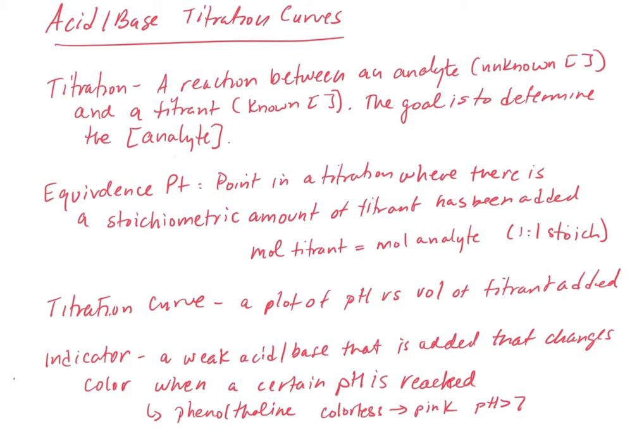A titration is a reaction between an analyte — something where we don't know the concentration — and a titrant — something where we do know the concentration. The goal is to use the amount of titrant to determine the concentration of the analyte, and we do that through the equivalence point. The equivalence point is the point in the titration where a stoichiometric amount of titrant has been added — essentially where the moles of titrant equal the moles of the analyte.